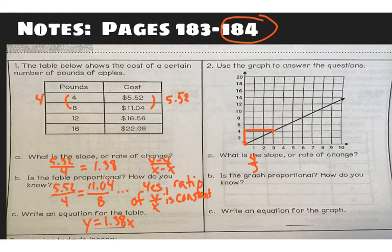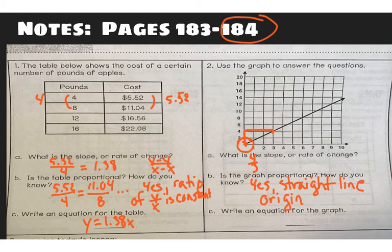Is the graph proportional and how do you know? Remember for a graph there are two rules. Is it straight? A straight line? Yes. And does it pass through 0, 0? Here's our 0, 0. So yes, and our reasons are straight line and origin, goes through the origin. Okay, and then write an equation for this graph. All we need is the slope. If it's proportional, right? Well, you're going to write y equals the slope, which we decided was 4 over 3 times x.